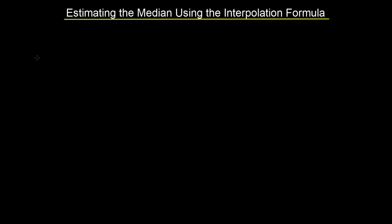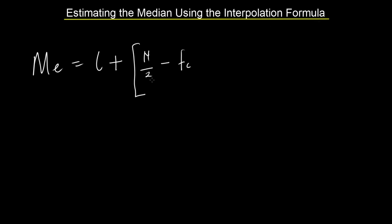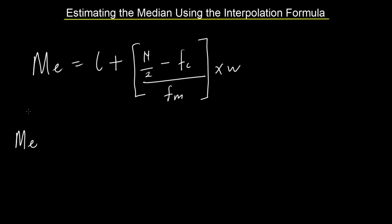The interpolation formula is defined as Me equal to L plus N over 2 minus F subscript C, divided by F subscript M, multiplied by W. We are going to be looking at what each of these terms stand for. The first one is Me, which is simply the median of the distribution we are looking at.